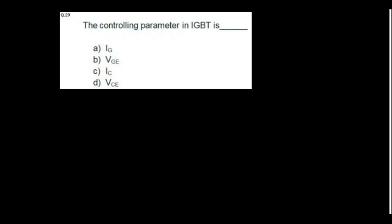The controlling parameter of IGBT. For a transistor, what is the controlling parameter? Base current. Similarly for the IGBT, it is a voltage control device. Where we will apply the voltage? Between the gate and the emitter. So VGE is the answer.